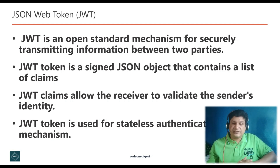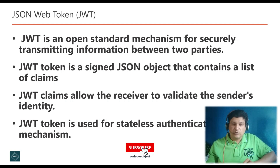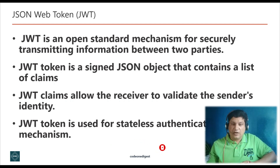JWT is an open standard, RFC 7519, that defines a mechanism for securely transmitting information between two parties. The JWT token is a signed JSON object that contains a list of claims, which allow the receiver to validate the sender's identity. The purpose of the JWT token is for stateless authentication — stateless authentication stores the user session on the client side.